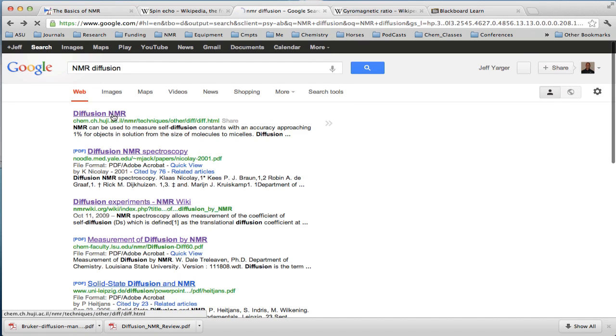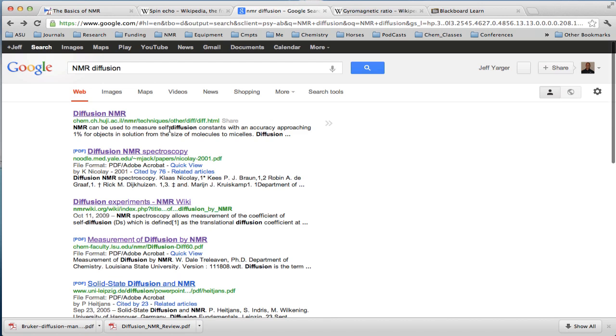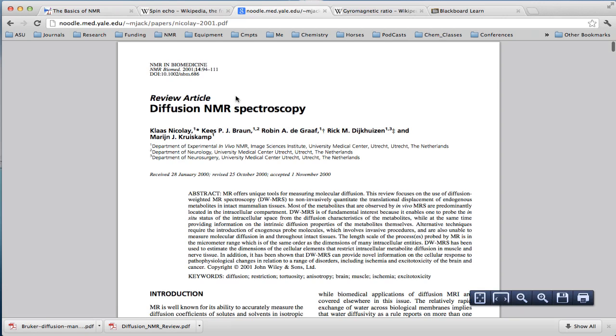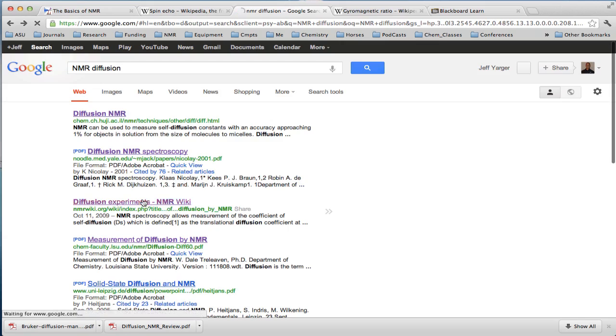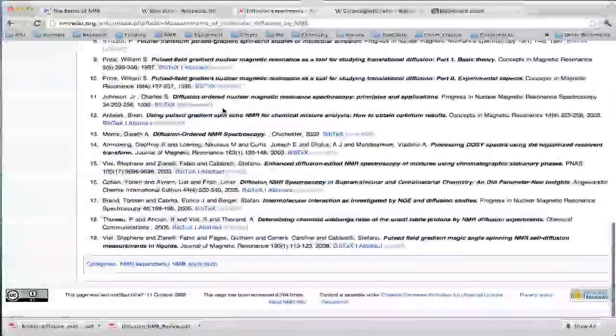There are several things on NMR diffusion, when you pull it up, that give fairly good explanations on this, including several articles. This diffusion NMR spectroscopy is a very good article. The wiki for diffusion NMR describes some of the basics.